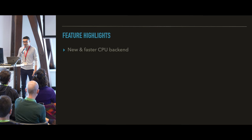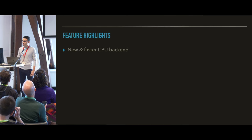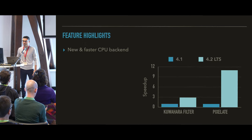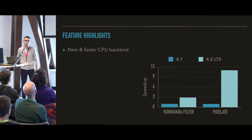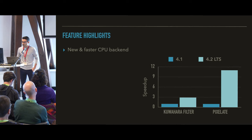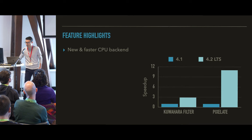The last feature I wanted to highlight is the new CPU backend, which is much, much faster. In 4.2 LTS we're up to 10 times faster — 3 to 10 times faster for complex filters — which is thanks to a new, completely redesigned CPU backend.